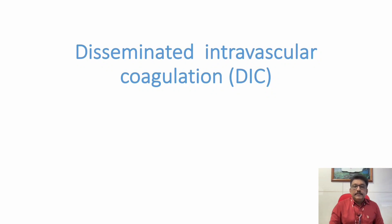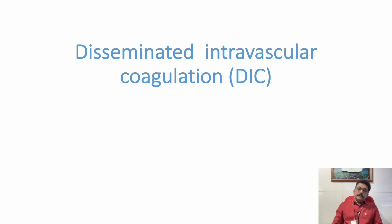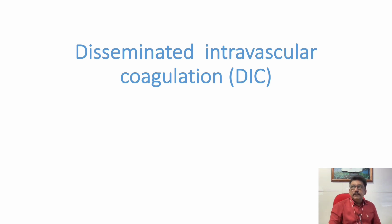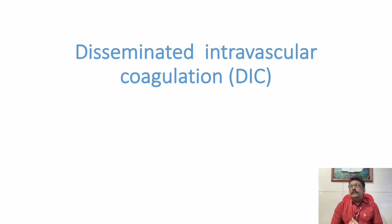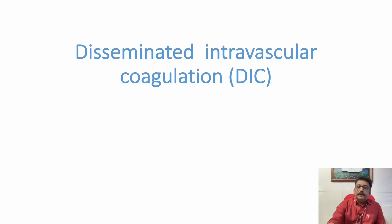Welcome to ATCM, the Emergency Medicine Journal. Today let us discuss disseminated intravascular coagulation. We commonly see this problem in sepsis, infections, malignancies, road traffic accidents and trauma, and hematological malignancies.